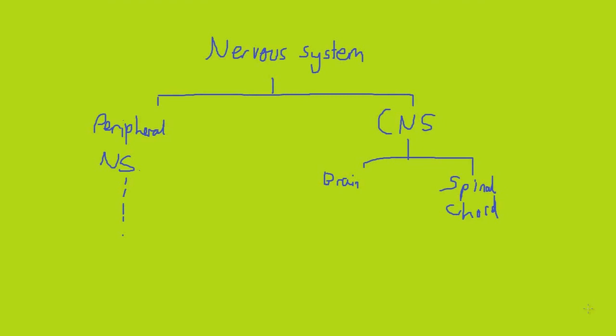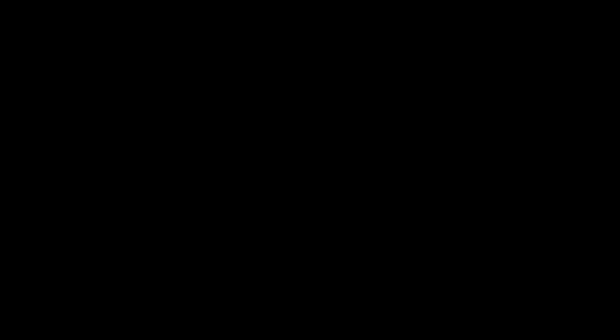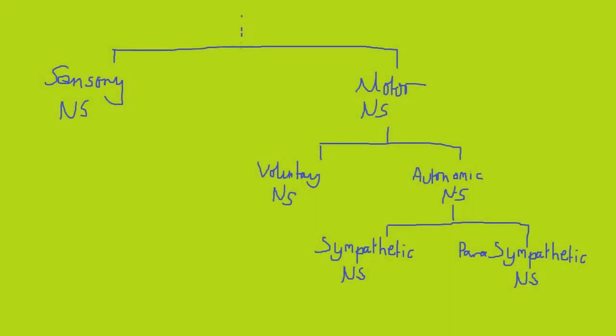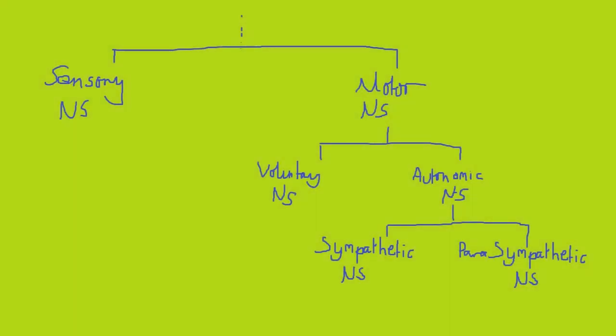The peripheral nervous system can be split up into further parts. It can be broken down into mainly the sensory nervous system and motor nervous system. The sensory nervous system connects receptors to the central nervous system, such as the spinal cord or the brain. It does this by using receptors and sensory neurons, which I will talk about later on in this video.